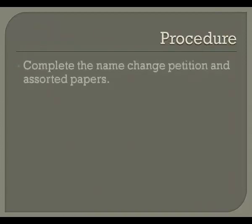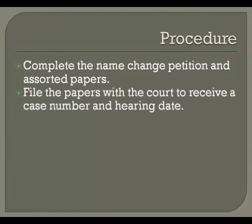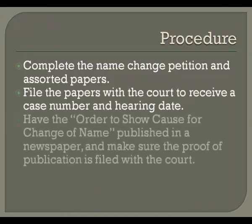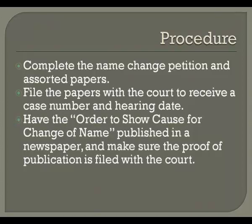First, you must complete the necessary paperwork to file the name change, and then copy and file these papers with the appropriate court to receive your case number and hearing date. The document that has the hearing date is called an Order to Show Cause. You must have the Order to Show Cause published in a newspaper in the county in which you are receiving your name change prior to the hearing. The newspaper will create a document called a Proof of Publication that must be filed with the court to confirm that the Order to Show Cause was published once per week for four consecutive weeks.